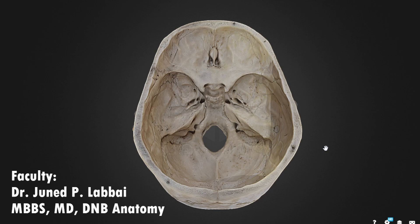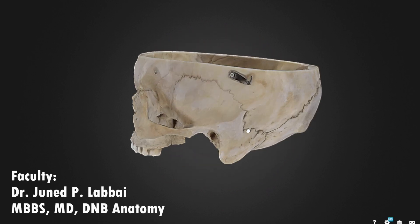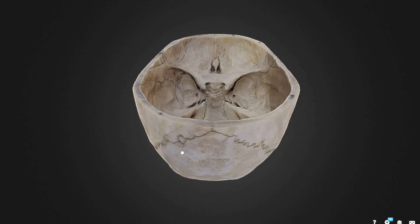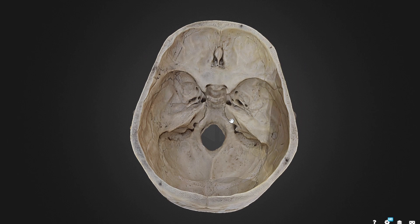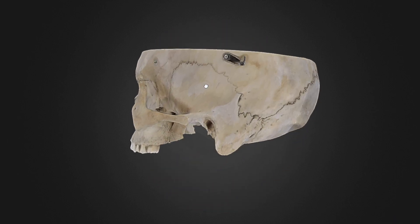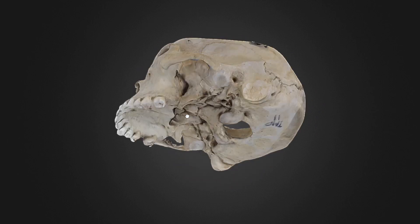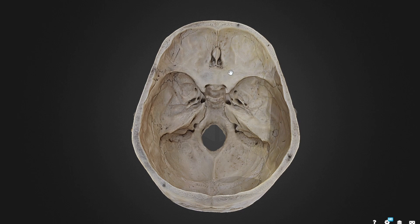Hello everyone. In this session we'll be learning about the cranial nerves which pass through the various openings of the cranial cavity. This is the base of the skull viewed from the superior aspect. This part is referred to as the cranial cavity, and from the side this part is referred to as norma basalis. In this session we'll be focusing on the cranial cavity and the cranial nerves passing through it.